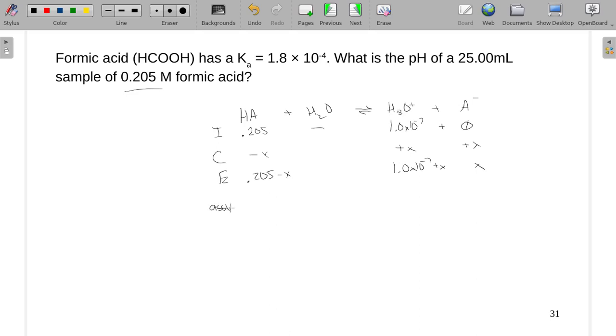And always remember on weak acids, we initially just do this assumption that this basically stays right where it was. The X is going to be very small. But here we're going to assume the X is so big, or much bigger than that one times 10 to the negative seventh. That makes plugging into our Ka so much easier.